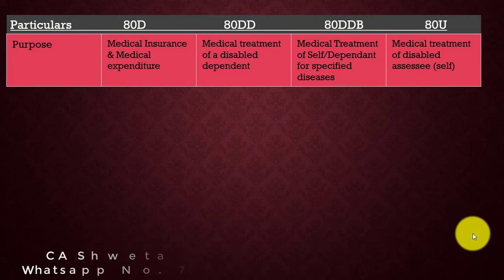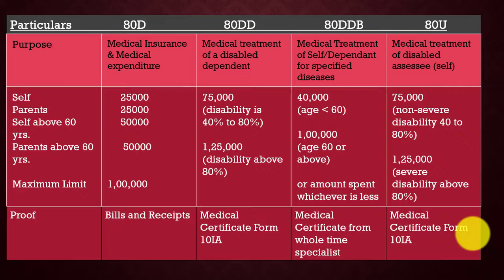If you claim a deduction in cash, it will not be allowed. First of all, let's talk about Section 80D. Section 80D covers insurance premium and medical expenditure claims.